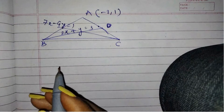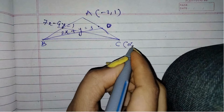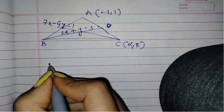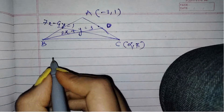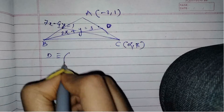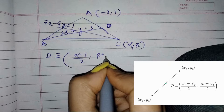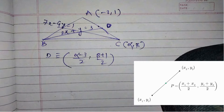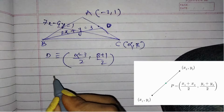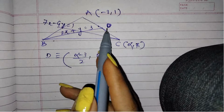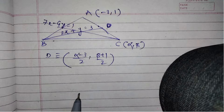To start the question, let us assume C to be (α, β). D is the midpoint of AC, so D will be equal to ((α - 3)/2, (β + 1)/2) according to the midpoint formula: (x₁ + x₂)/2, (y₁ + y₂)/2. And D lies on line BD because it passes through the median.